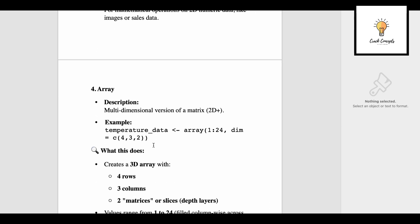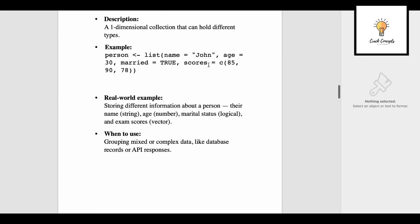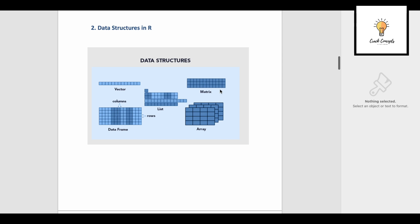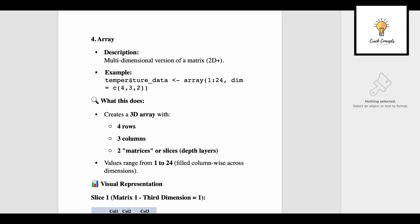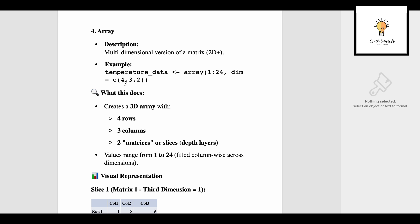Next is array, which is one step further from matrix — a multi-dimensional version of a matrix, 2D and beyond. A matrix has rows and columns of the same data type; an array is a collection of matrices. As shown in the diagram, there are three slices — three matrices. To create an array: temperature_data arrow array, with values 1:24 and dim equal to c(4, 3, 2), creating a 3D array with four rows, three columns, and two matrices.